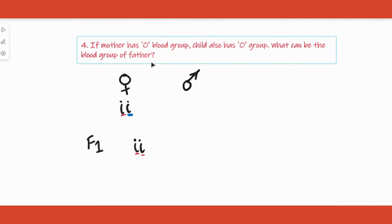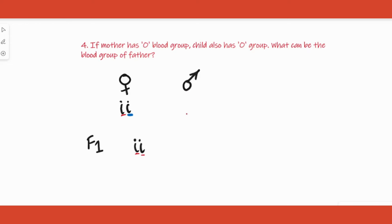Next question: mother's blood group is O, child's blood group is also O. What are the possible blood groups of the father? Mother is ii, child is ii. One small i came from the mother — now what could the father's other allele be? The father's genotype could be Iai (blood group A), Ibi (blood group B), or ii (blood group O) — so all three are possible.